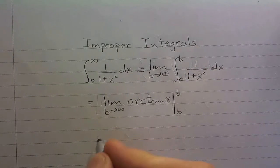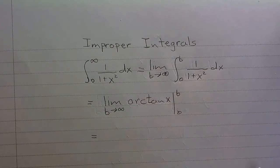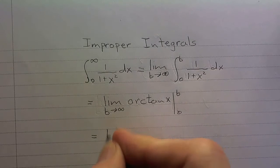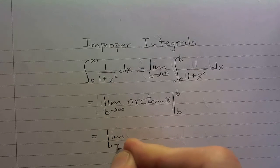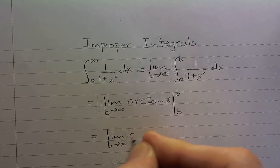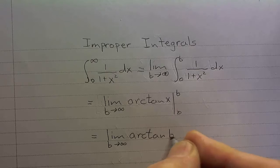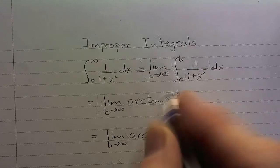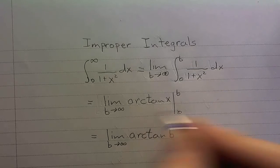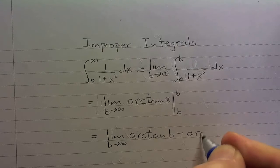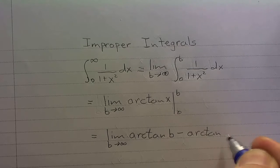Okay, now let's see where we can go from there. I can go ahead and plug in. So I've got the limit as b goes to infinity of arctan of b minus – now, I don't need to use the limit over here. I'm just going to say arctan of 0.